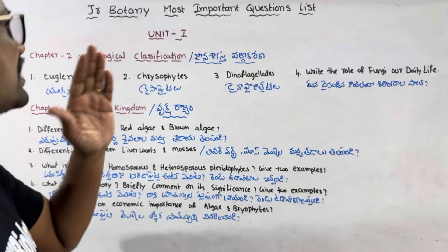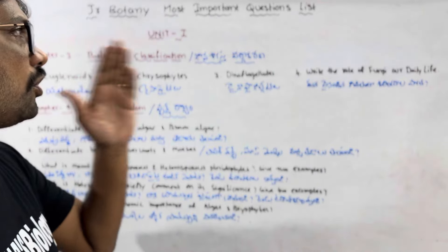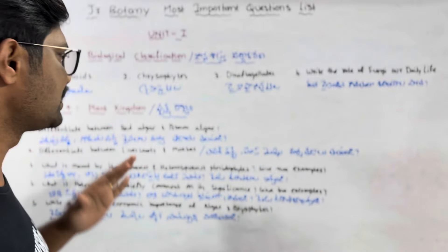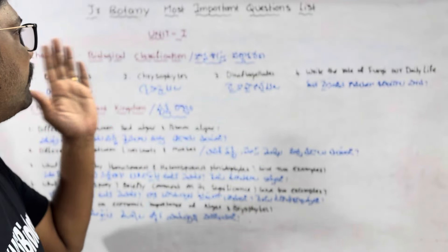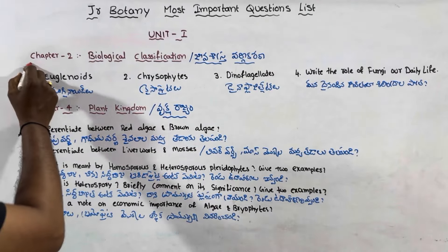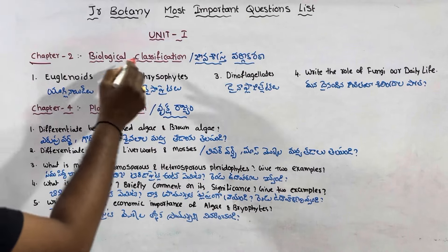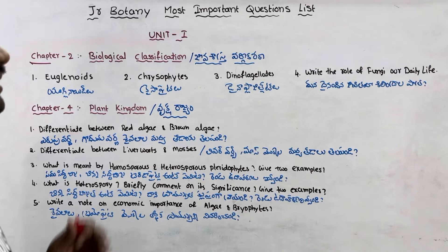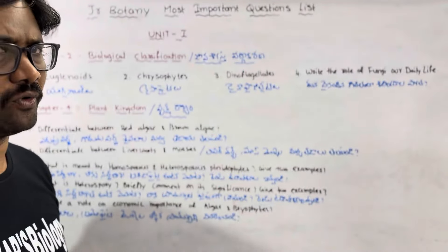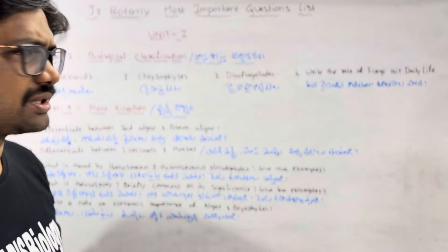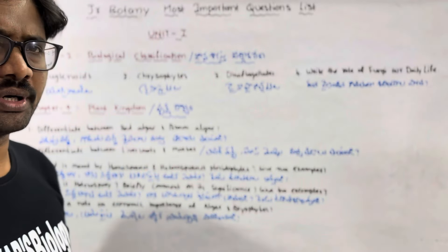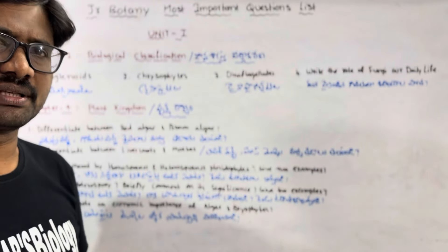In junior botany, the most important four marks questions are listed for Unit 1. Chapter 2 is Biological Classification, and there are important four marks questions ready for this chapter.